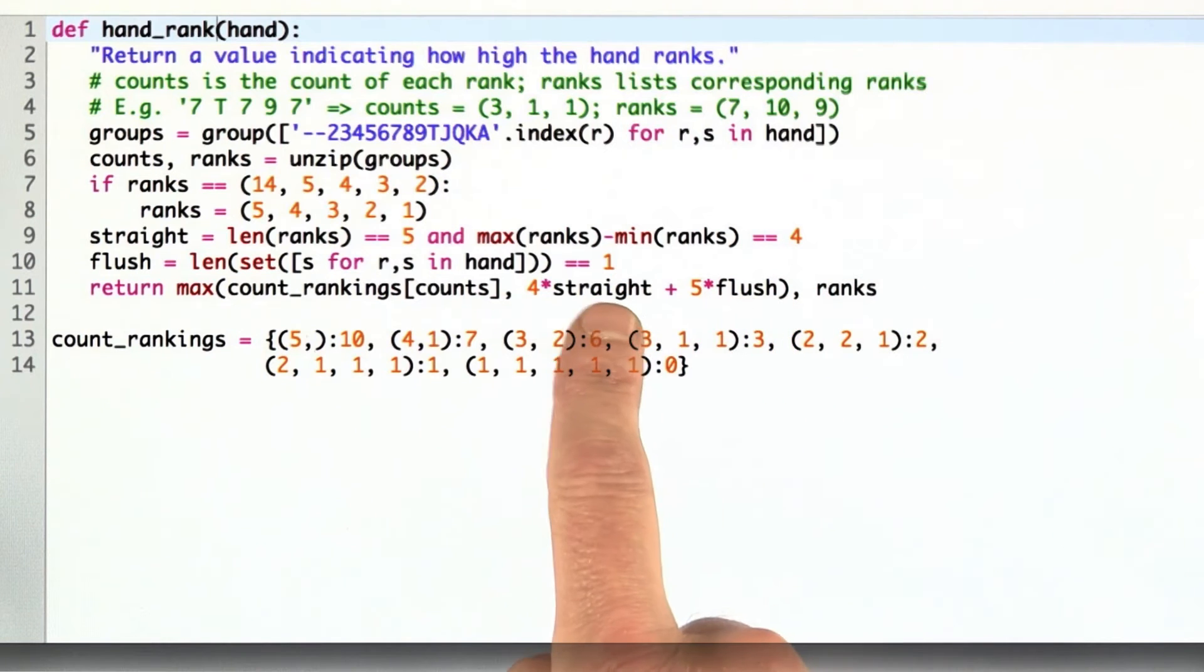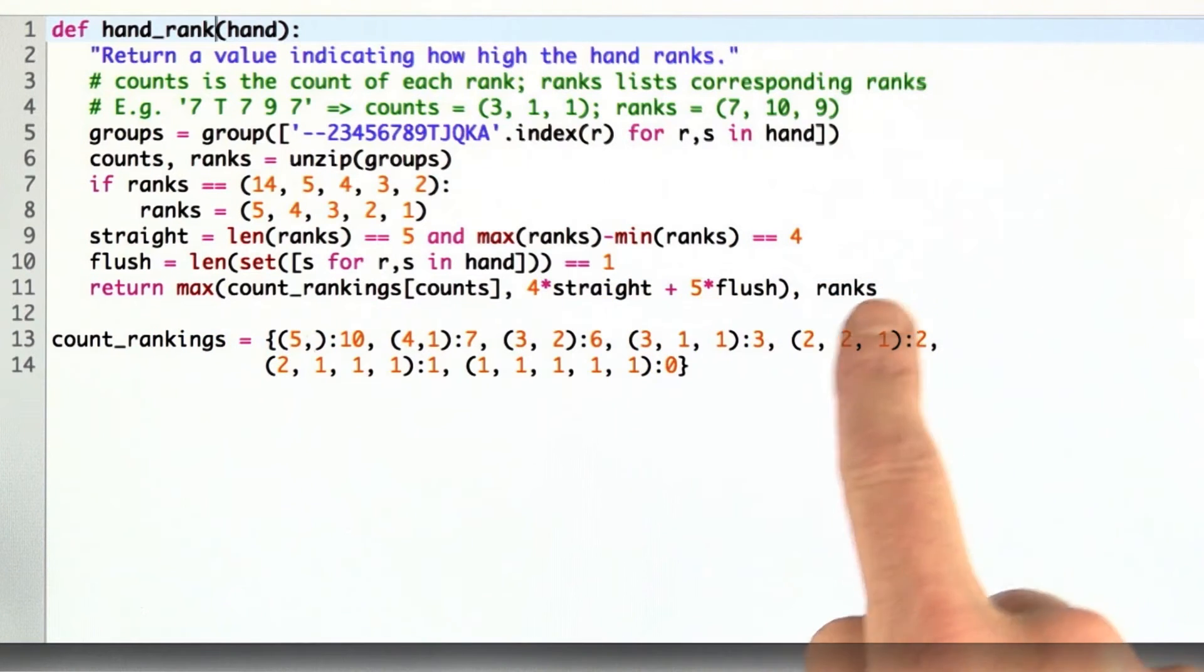And what we had to do here, that was in the previous results, straight flush was supposed to be eight, but it's okay if it's nine. All we have to do is take five of a kind and bump that up to ten. And now we get the right rankings by taking the maximum of that. We still have to return the ranks to break the ties.